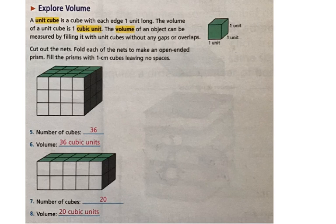To discuss volume you need to understand unit cubes. A unit cube is a cube with each edge being one unit long. The volume of a unit cube is one cubic unit. The volume of an object can be measured by filling it with unit cubes without any gaps or overlaps and you can see up here on the right, I'm going to circle it here, that is one unit cube and you can create larger units of volume by stacking cubes together again with no gaps.